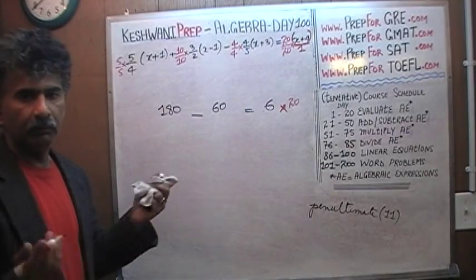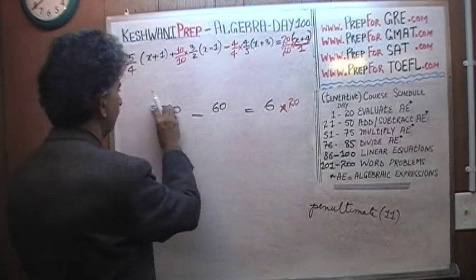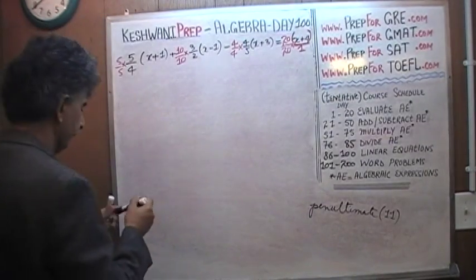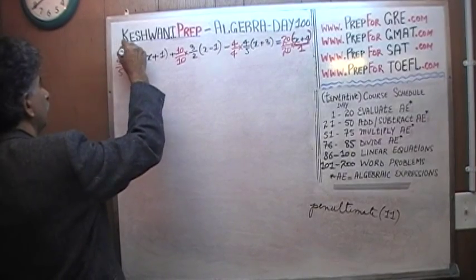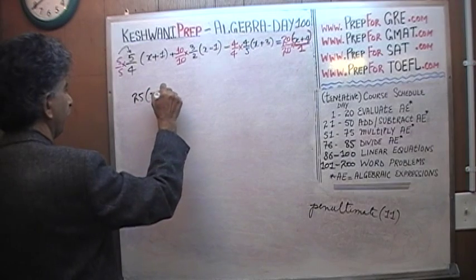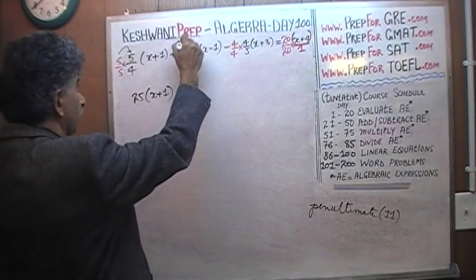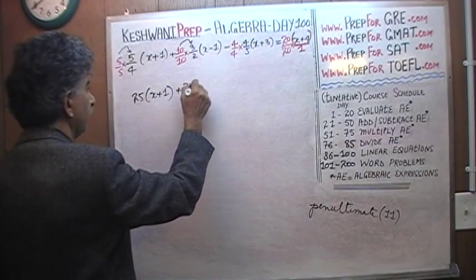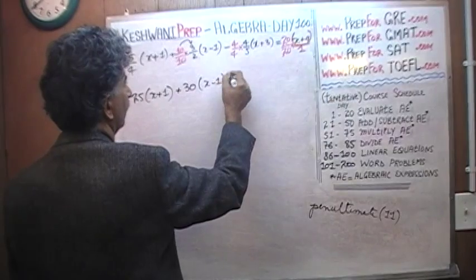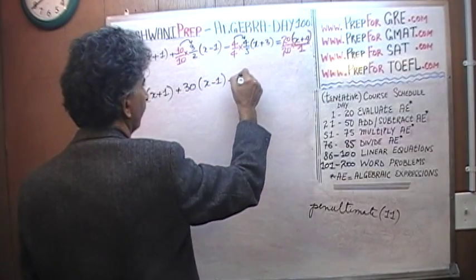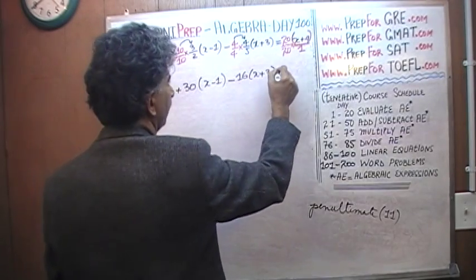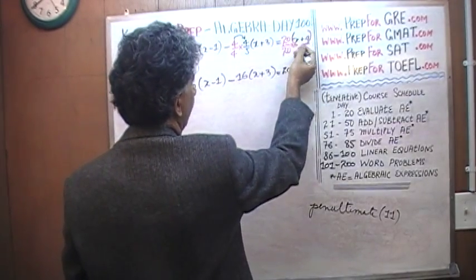The 20 no longer plays any role in the bottom — we'll just ignore it. So now we have 5 times 5, which is 25, times (x plus 1). We have 10 times 3, which is 30, times (x minus 1). Then we have 4 times 4 with a minus sign, so 16 times (x plus 3). And on the right side we have 20 times (x plus 4).